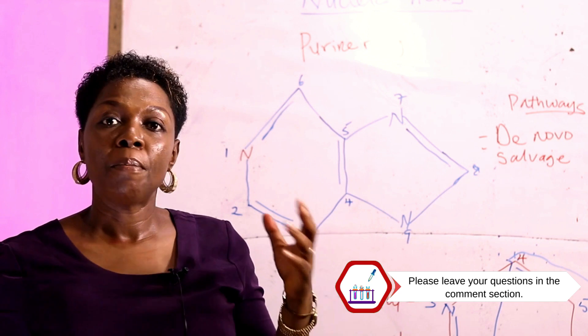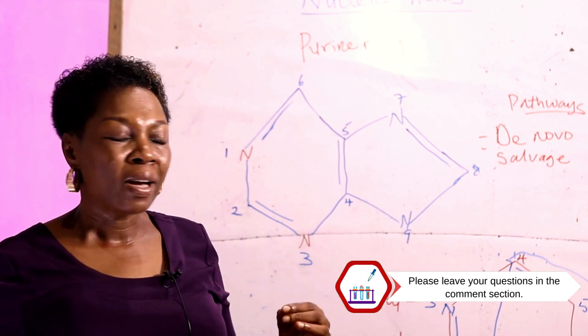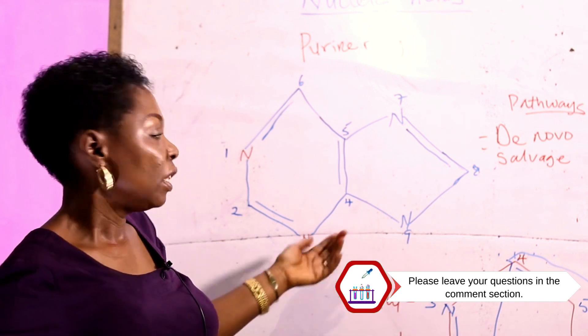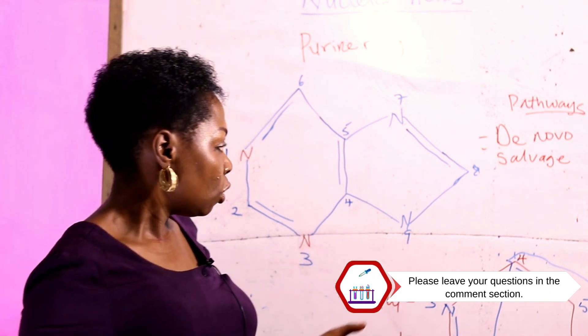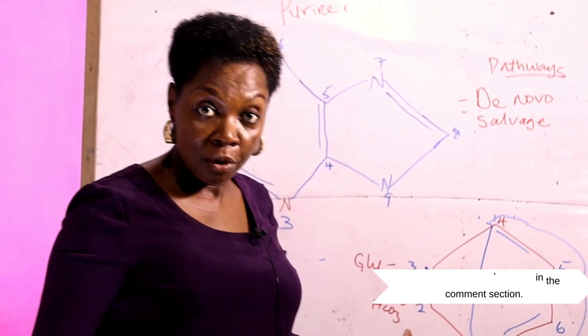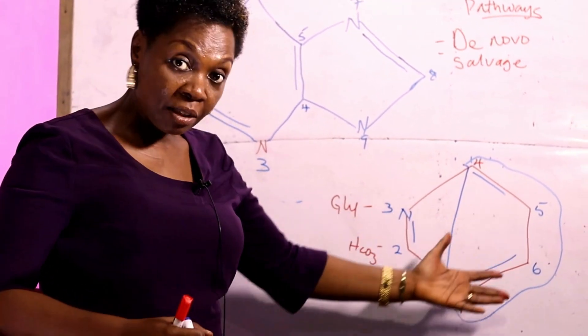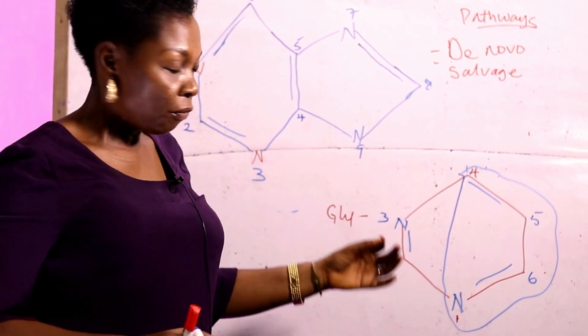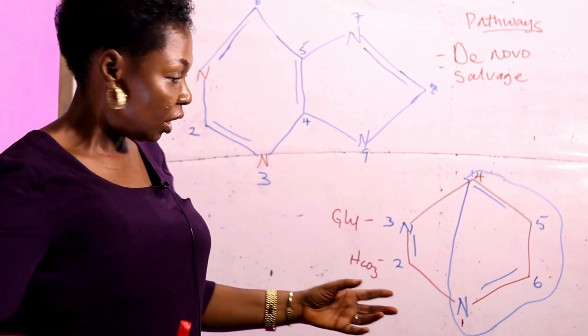Before we go into the metabolic pathway, let's look at the carbon and nitrogen sources of the nitrogenous bases. This is a pyrimidine base and it's